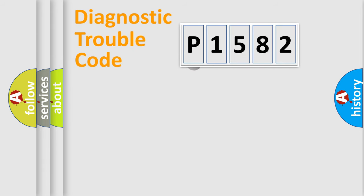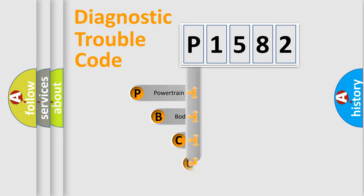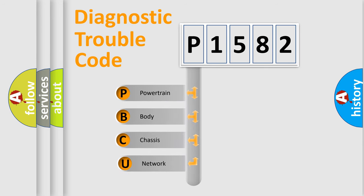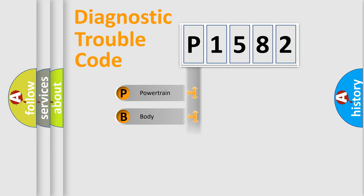First, let's look at the history of diagnostic fault code composition according to the OBD-2 protocol, which is unified for all automakers since 2000. We divide the electric system of an automobile into four basic units: Powertrain, Body, Chassis, and Network.